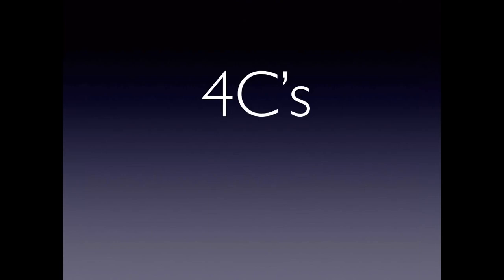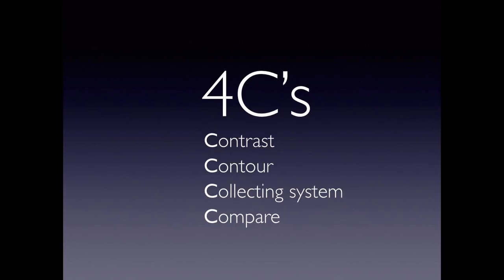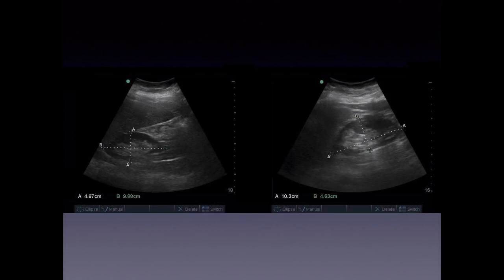A helpful framework for renal scanning is the four C's: contrast, contour, collecting system, and compare. Look at the grayscale contrast of the kidney, the contour for any masses or cysts, the collecting system within the renal sinus, and then compare both sides for symmetry. Normal kidneys should be about 9 to 12 cm long and 4 to 6 cm wide.